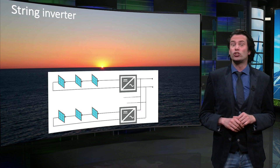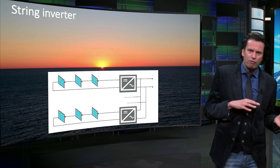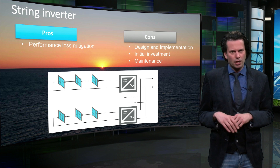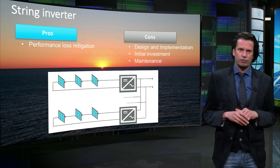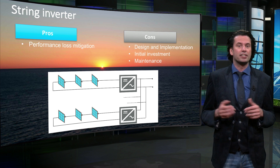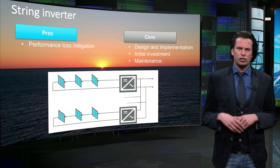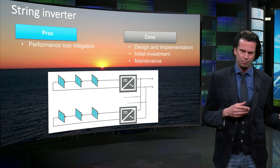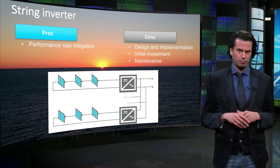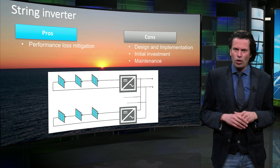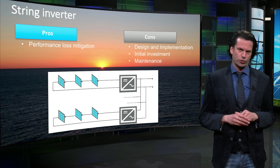Then we have the string inverter concept, which seeks to strike a balance between the module-level inverter and the central inverter topologies. The string inverter topology is more resilient to mismatch than the central inverter, because each string is independently operated at its maximum power point, guaranteeing a higher energy yield. String inverters are smaller than central inverters. However, the implementation is more complex than the module inverter, and partial shading will have a greater influence over the string inverter topology than over the microinverter topology.